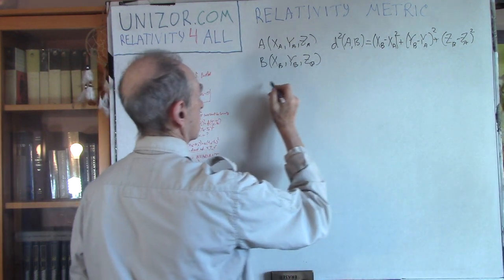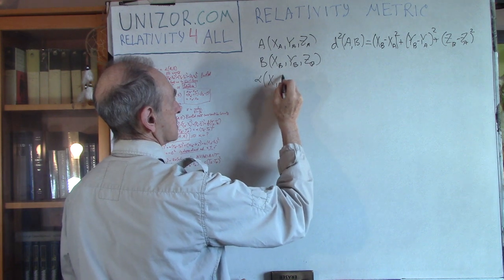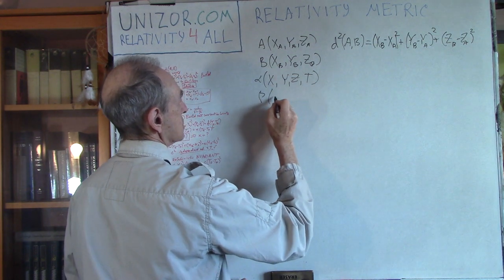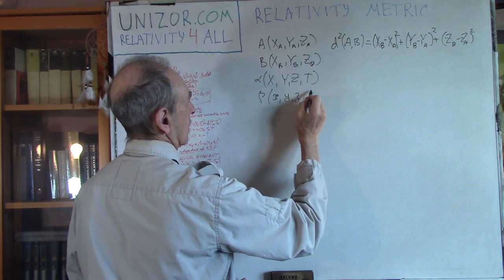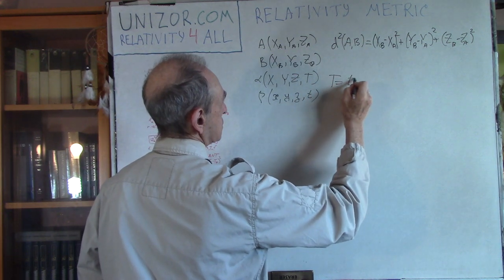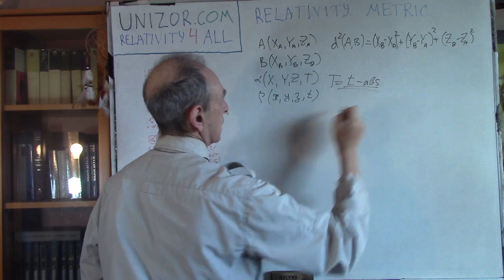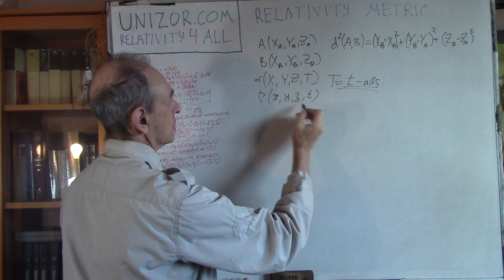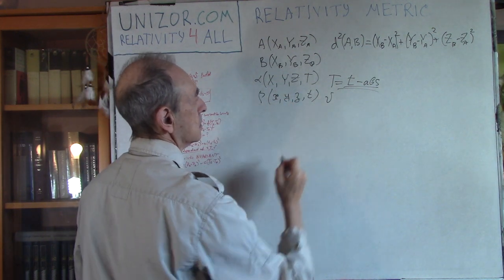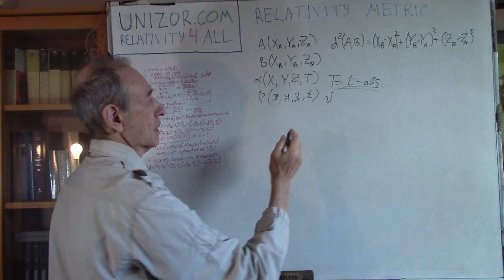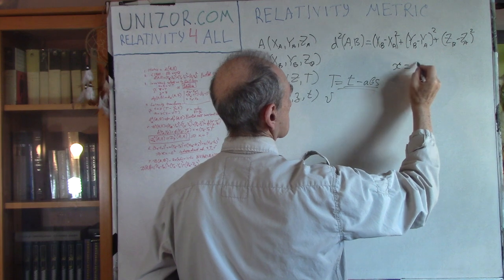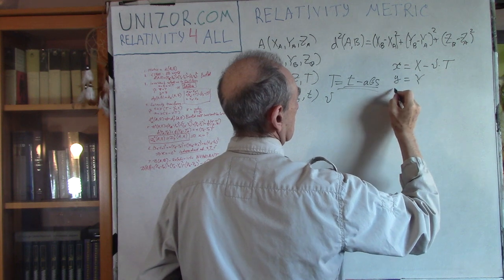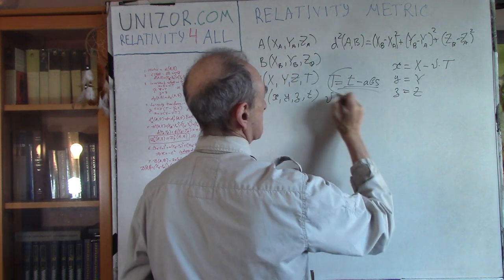Remember this? If you have an alpha system with X, Y, Z, and time T, and a beta system with lowercase coordinates — where T is equal to T, meaning time is absolute, always the same — and in a simple case when the beta system is moving along the X axis with speed V relative to the alpha system, the transformation was very easy: x equals X minus V times T, y equals Y, z equals Z, and t equals T as well.